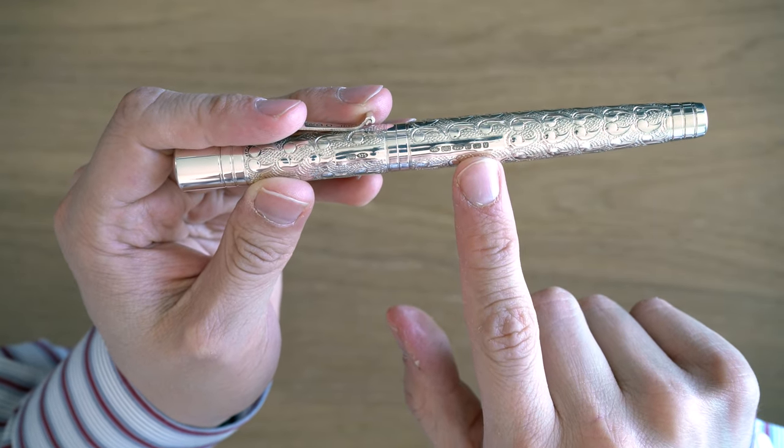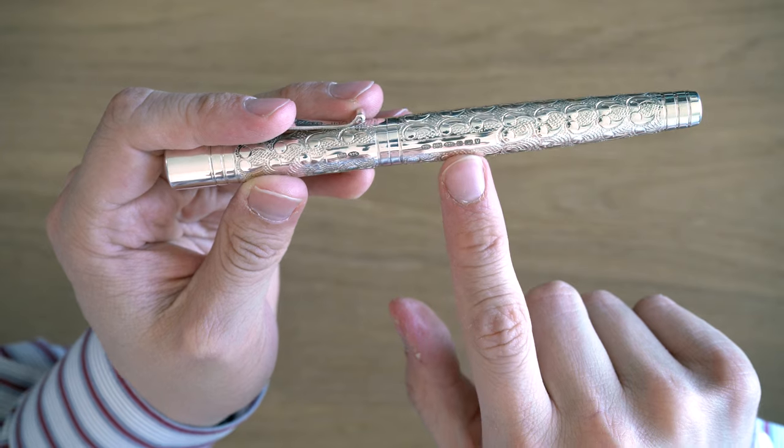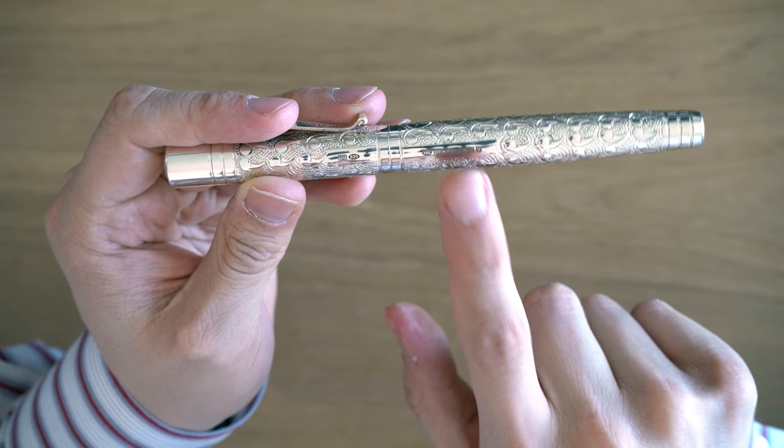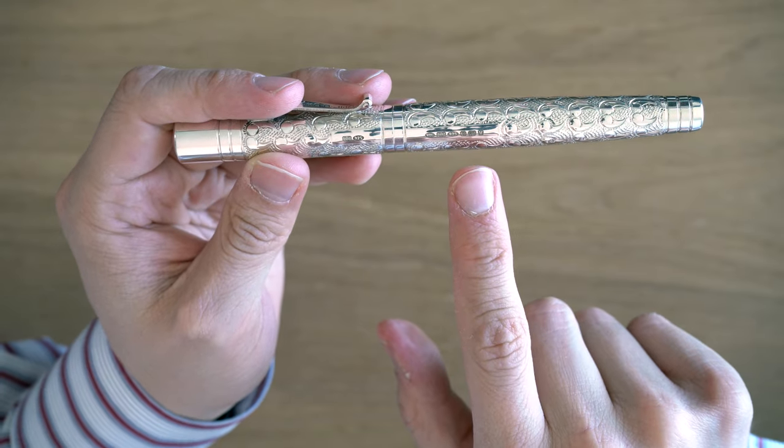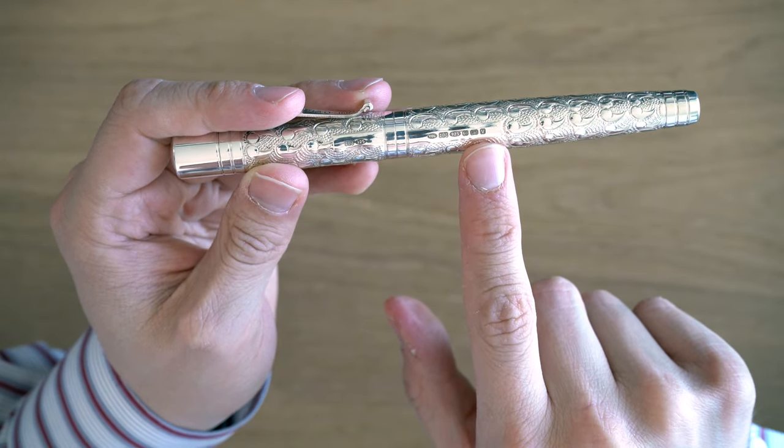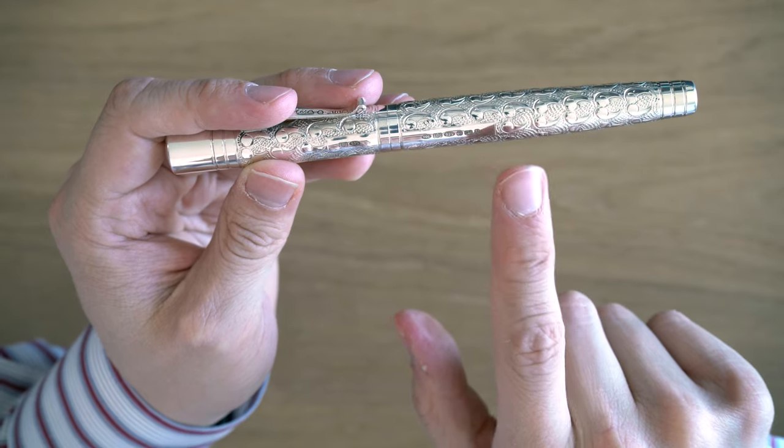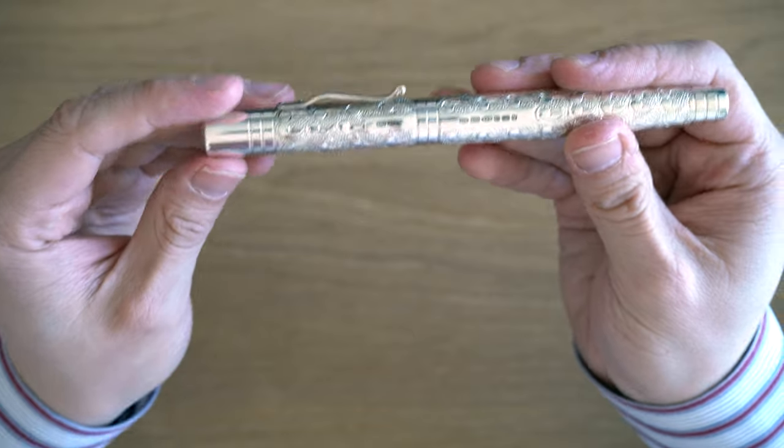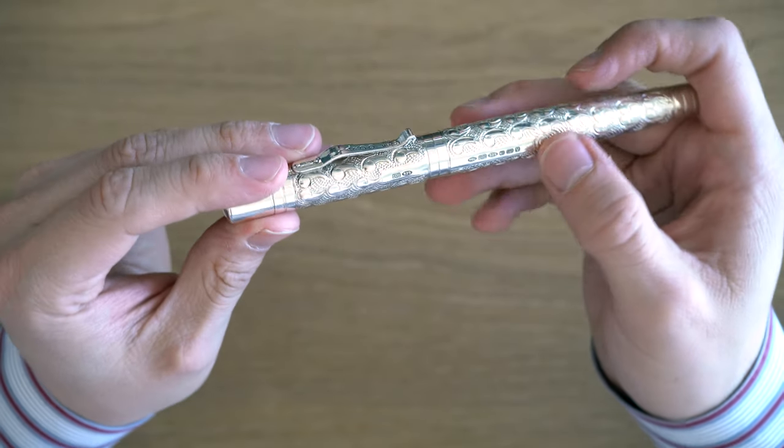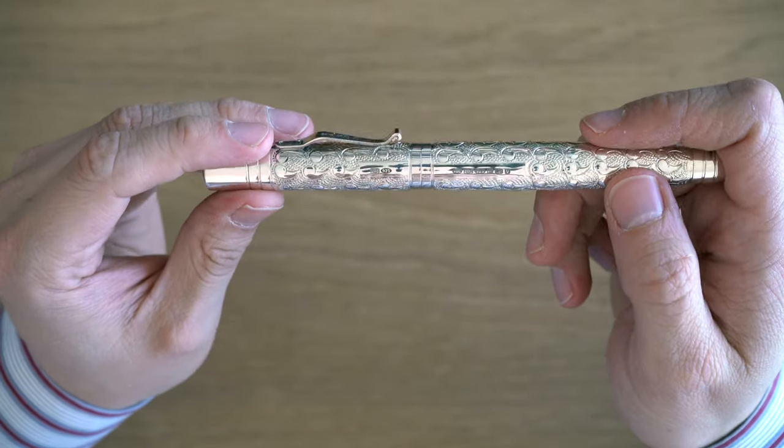And then we have an anchor, which I believe represents Birmingham, where this pen is made. Please let me know if that's wrong. Then we have a lion, which is the mark for English sterling silver. And then we have a V. I don't know what that is. That's maybe a date code or something. If someone knows what that V hallmark means, let me know.